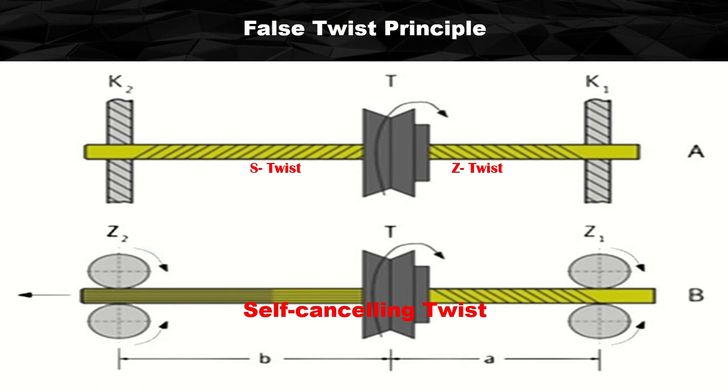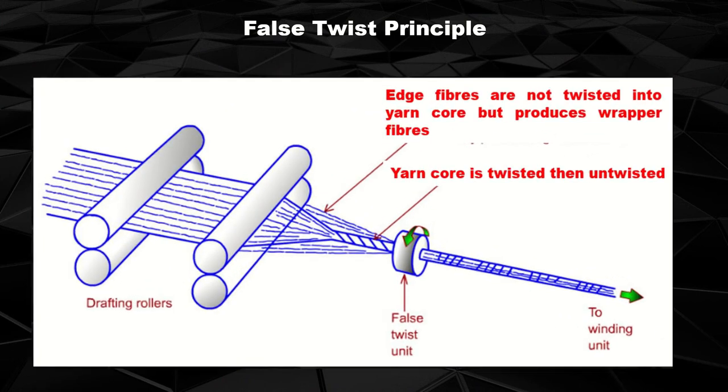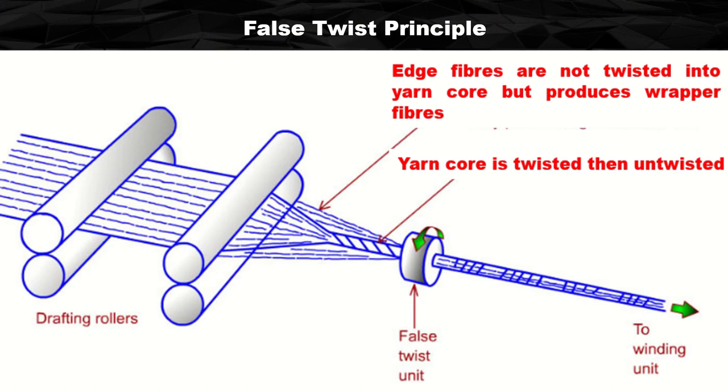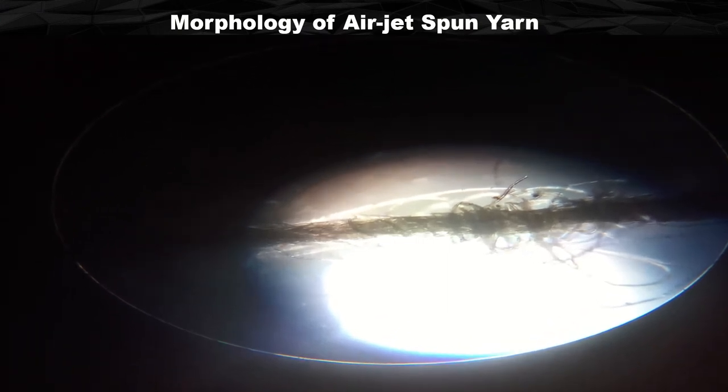Using false twist mechanism, the yarn core is twisted and then untwisted. The edge fibers are not twisted into the yarn core but produce wrapper fibers. In this way, parallel core fibers along with some wrapper fibers produce the air jet spun yarn. If you look at the morphological structure of air jet spun yarn, you can see parallel core fibers present along with wrapper fibers, which are surface fibers wrapped over the core.